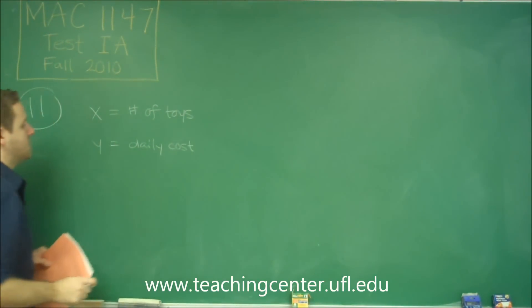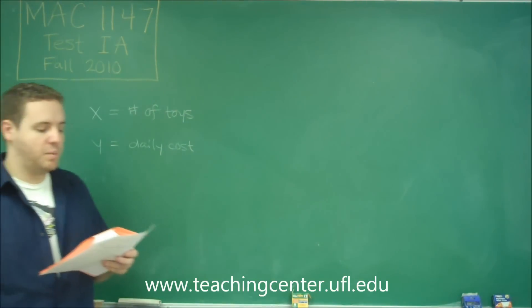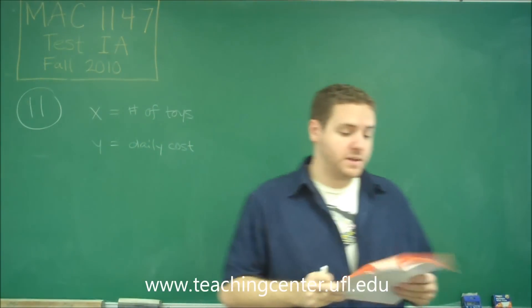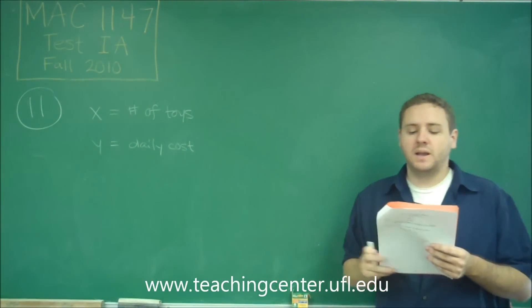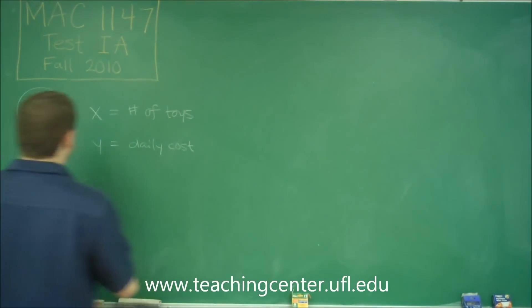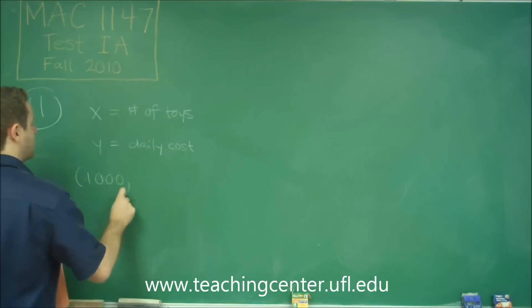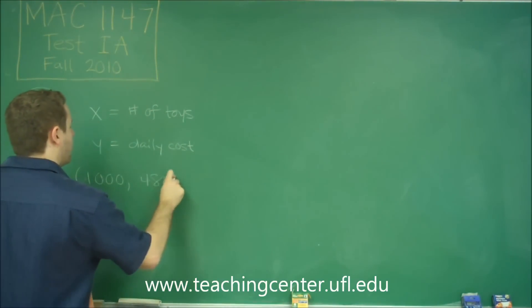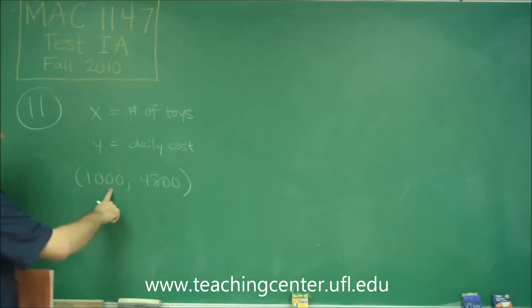Well, those figures that we were given at the beginning of the problem are then just coordinate points, because if it costs $4,800 to produce 1,000 toys, that's corresponding to the coordinate point (1000, 4800), because our X number of toys is 1,000, the cost of it was $4,800, that's our Y.